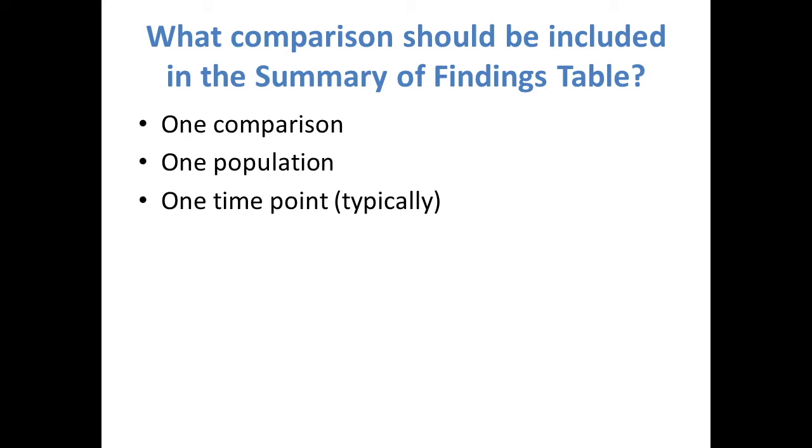Before you start to create your summary findings table, you will need to choose which comparison to include in the table and which outcomes. It is recommended that only one comparison should be included in a table: one intervention compared to no treatment or another treatment, in one population, and at one time point.